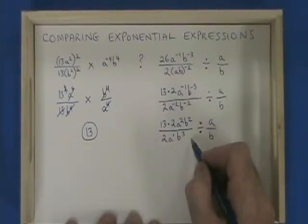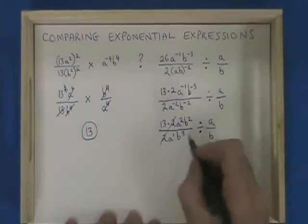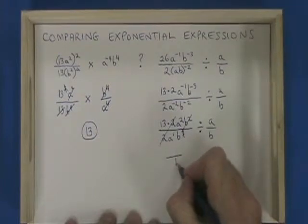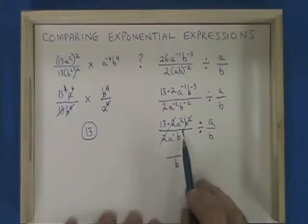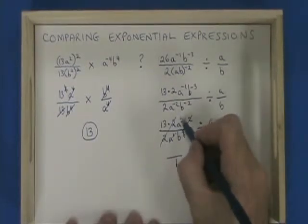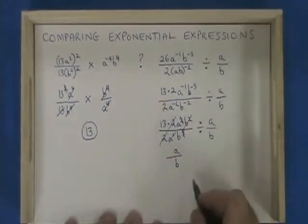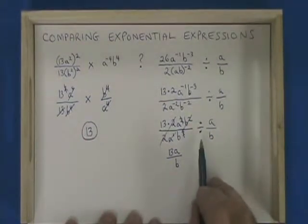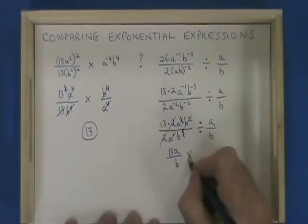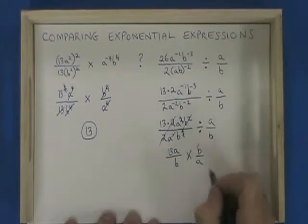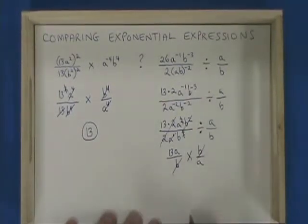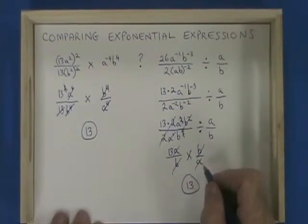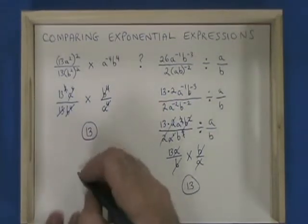Now I'm going to do some cancelling. The 2s cancel. Both of the b's on the top cancel with two of the b's on the bottom, leaving a b on the bottom. The a on the bottom cancels with one of the a's on the top, leaving an a on the top. The 13 stays on the top. Because I'm dividing fractions, I multiply instead and turn the second fraction upside down. Now these b's cancel and these a's cancel. All that's left is 13. In the end, 13 equals 13 — they are equivalent, and I have to say so.